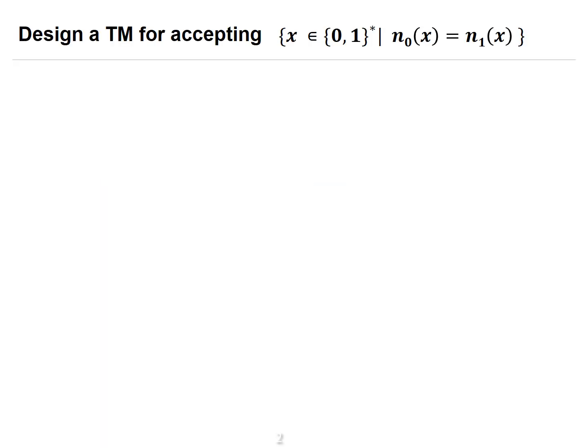Today in this video I'll discuss one of the problems in Turing machine. One such problem is: design a Turing machine for accepting the same number of zeros and ones. That means, given a string x consisting of zeros and ones, the number of zeros should be equal to the number of ones in the given string.